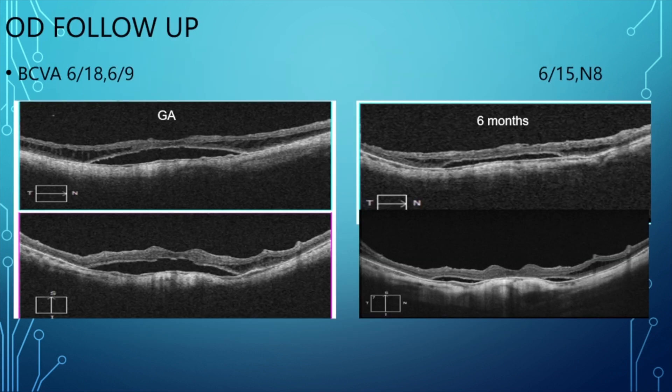The postoperative OCT showed persistent macular detachment with thickened photoreceptor layers. At 6 months follow-up, foveal detachment had disappeared, but there was loss of ellipsoid band and some perifoveal schisis with minimal SRF. BCVA improved from 6/18 at the glass appointment to 6/15 at 6 months.